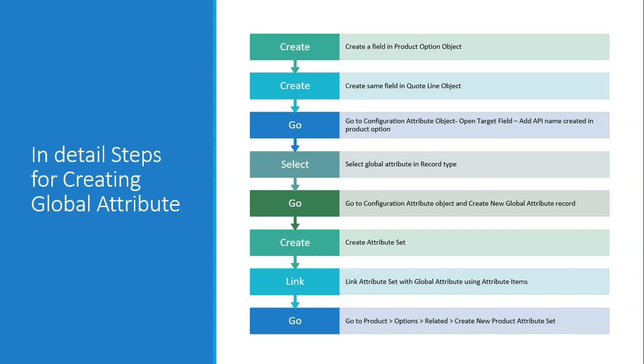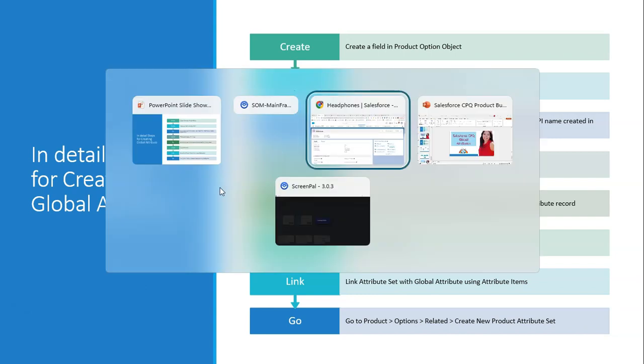First, create a field in the product option object — that is the same as a normal configuration attribute, so that we are able to see it in the configuring product. Then create a field in the quote line object with the same API name. Then go to the configuration attribute object, open the target field, and add the API name. Then select global attribute as the record type. Then go to the configuration attribute object and create a new global attribute record. Create an attribute set, link the attribute set with the global attribute using attribute items, then go to the product option related and create a new product attribute set.